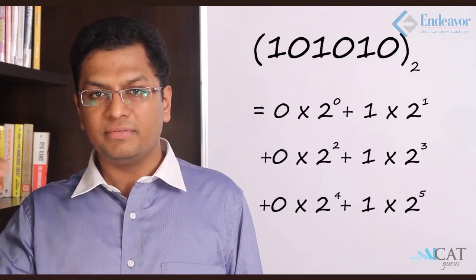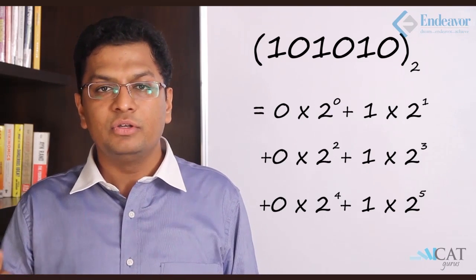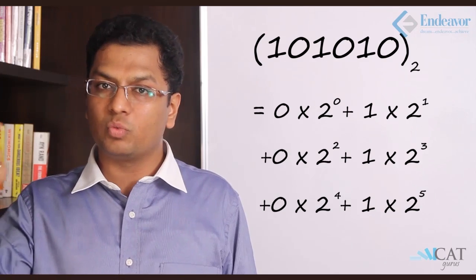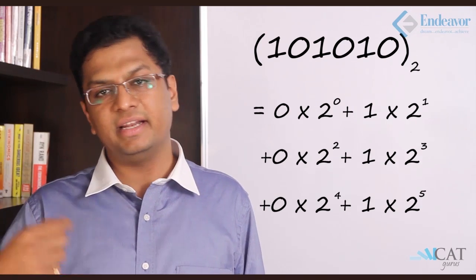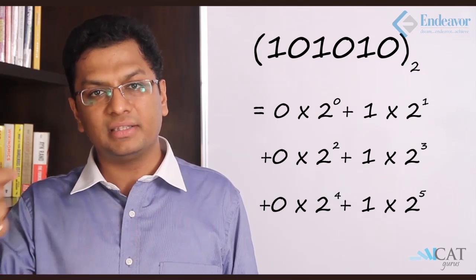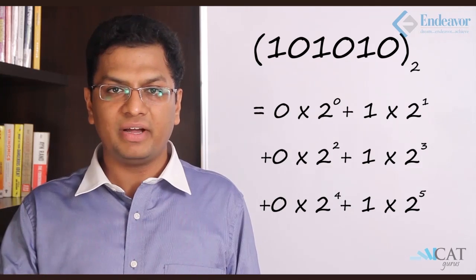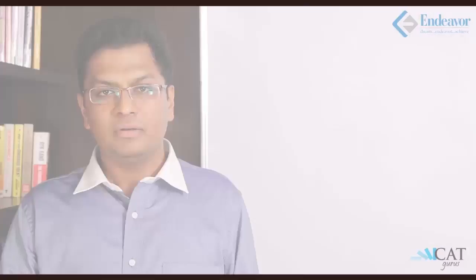Let's take the binary number 101010. The digit 0 at any position contributes no value, so only the 1s matter. The second digit (1) contributes 2¹, the fourth digit (1) contributes 2³, and the sixth digit (1) contributes 2⁵. This is how the binary positional system works.